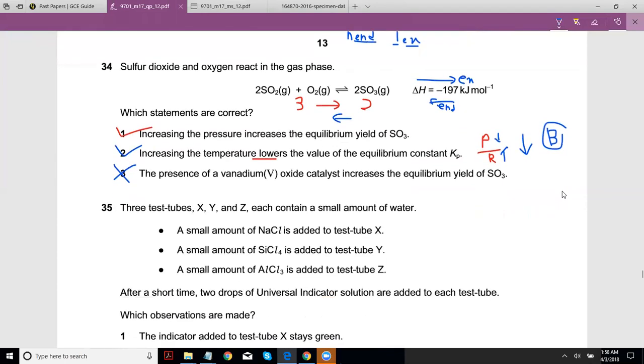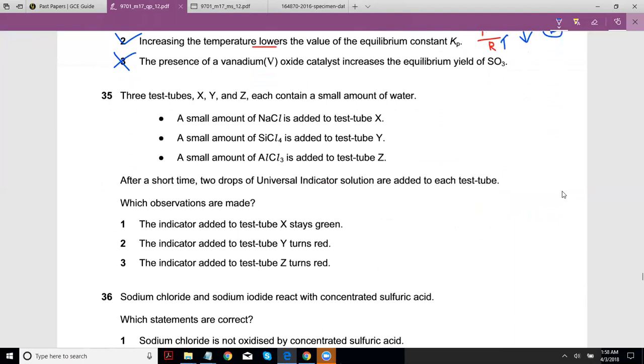Three test tubes X, Y, and Z each contain a small amount of water. A small amount of NaCl is added to test tube X, a small amount of SiCl4 is added to test tube Y, and AlCl3 to Z. After a short time, two drops of universal indicator solution are added to each test tube. What observations are made? Test tube X stays green - this should be neutral, right? And these two should be acidic. Yes, and they do both turn red, which I'm assuming is acidic. So this should be A, which is all three correct.